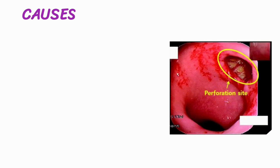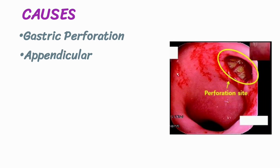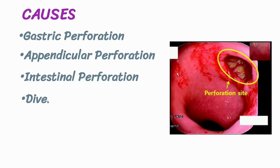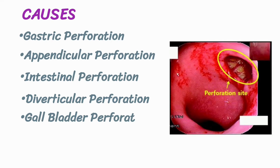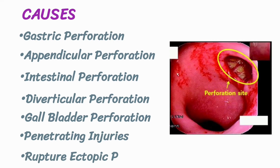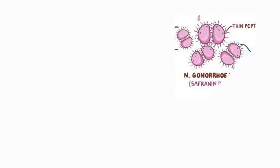Now let's discuss the causes of peritonitis. Common causes include gastric perforation, appendicular perforation, intestinal perforation, diverticular perforation, gallbladder perforation, penetrating injuries, drains and tubes, ruptured ectopic pregnancy, pelvic inflammatory diseases, and bacterial infections.